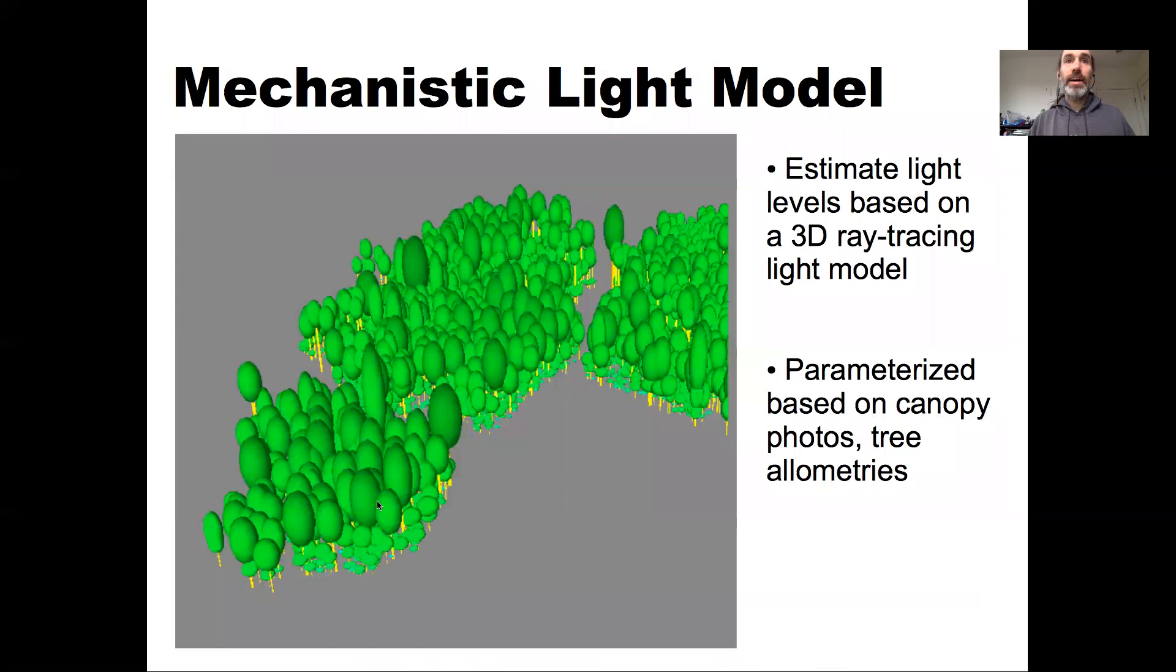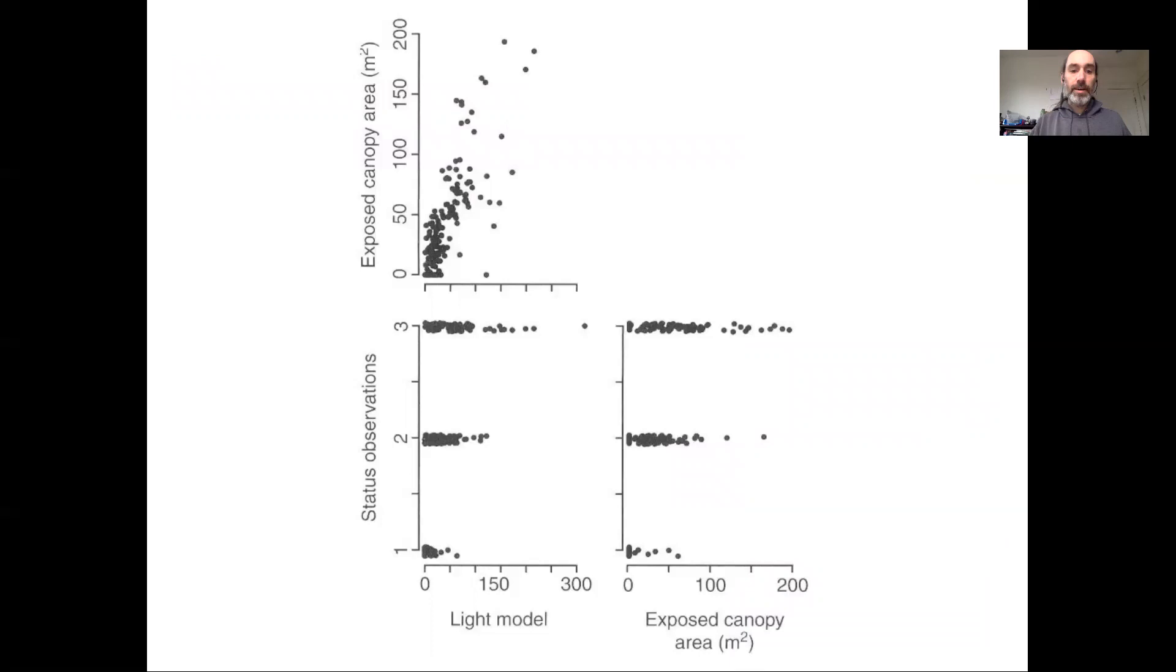One of the sources of information was a mechanistic model of how light intercepted with canopies that was generated by running a 3D ray tracing model and was parameterized based on a combination of the tree allometries and canopy photos. Using photography in the understory to measure light environments and using that to calibrate how much light actually passes through tree canopies, it's a calibrated mechanistic model of light moving through canopies.